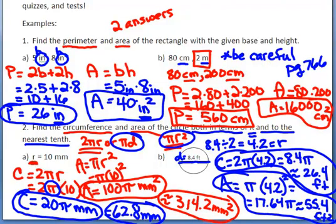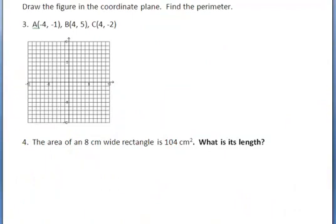I have one more example using graphing — go ahead and pause to get the graphing ready. This is a challenging problem. It says: draw the figure in the coordinate plane and find the perimeter. This shape has three points, A, B, and C, so it will be a triangle.